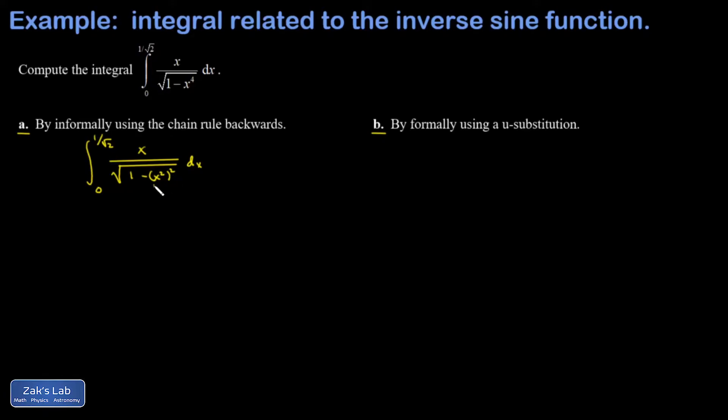That makes the x squared the inner function here, and then I essentially have the derivative of that sitting in the numerator. It's missing a 2, but I have the right functional piece.